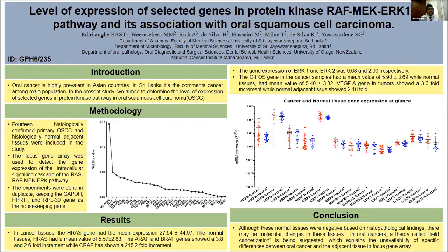Before going to the main study, we initially did a small study to identify suitable reference genes. Commercially, there are nearly 32 selected reference genes available for real-time PCR analysis. We ran that panel on our samples to determine the most suitable reference genes. Based on the stability values shown in this chart, we selected GAPDH, HPRT1, and RPL30 as our reference genes.